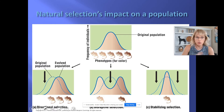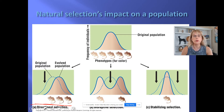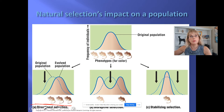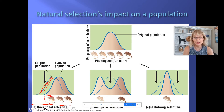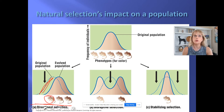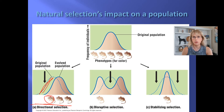Let's start with directional selection. This is the example where if the fox eats the slow rabbits, then over time rabbits get faster. Or if the fox can see light-colored mice on the background of this environment, then the mice will get darker and darker over time. That is called directional selection — the example we're always giving.